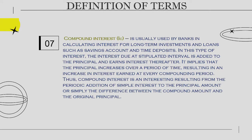Compound interest is usually used by banks in calculating interest for long-term investments and loans such as savings accounts and time deposits. In this type of interest, the interest due at a stipulated interval is added to the principal and earns interest thereafter. It implies that the principal increases over a period of time, resulting in an increase in interest earned at every compounding period. Thus, compound interest is the periodic addition of simple interest to the principal amount — or simply the difference between the compound amount and the original principal.